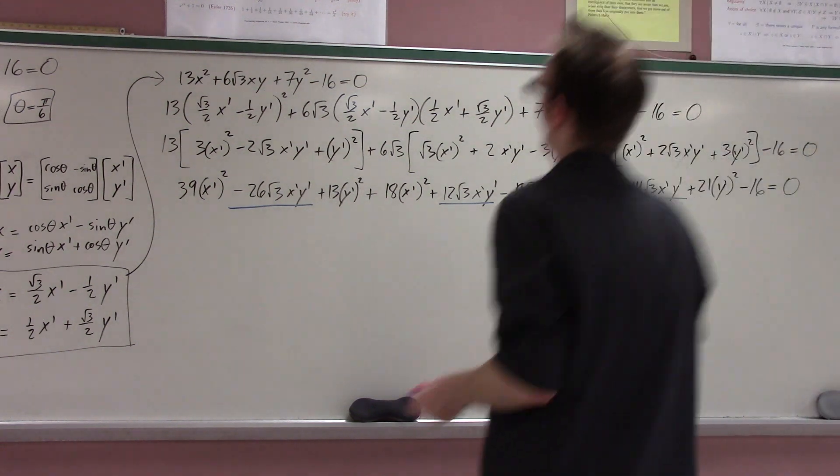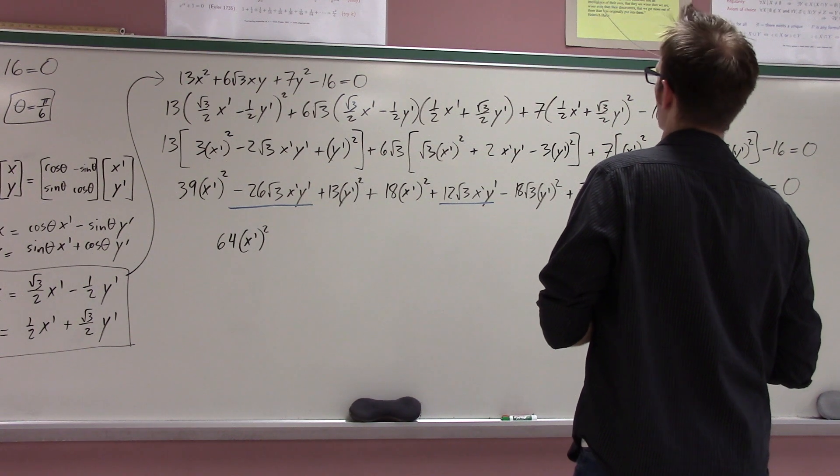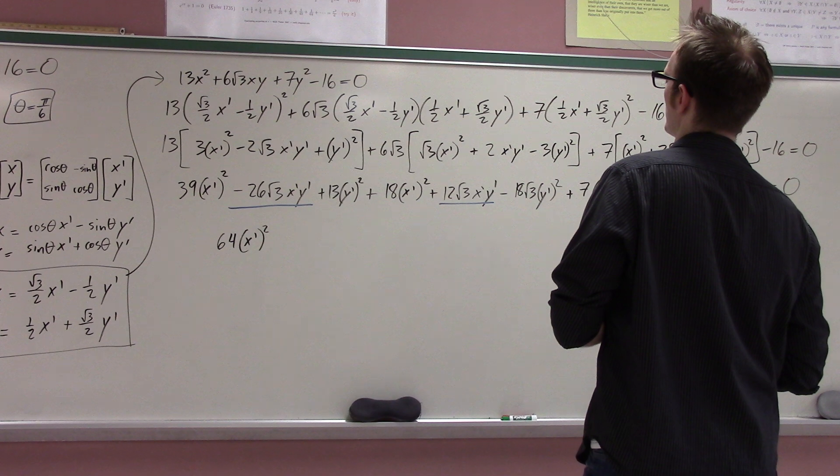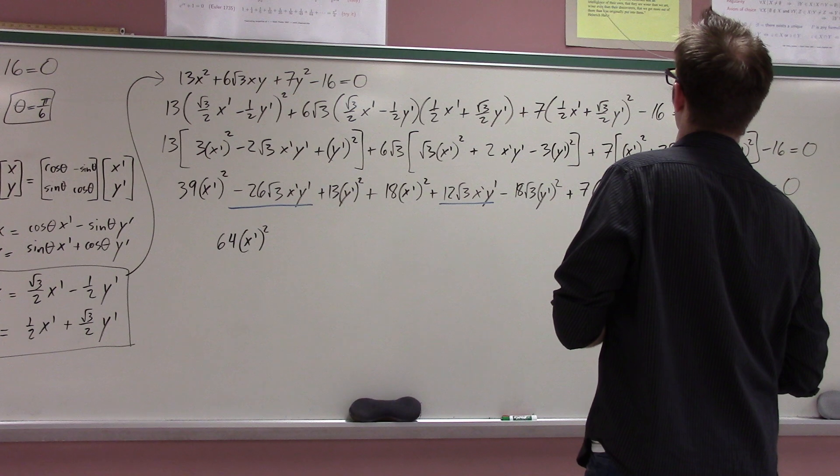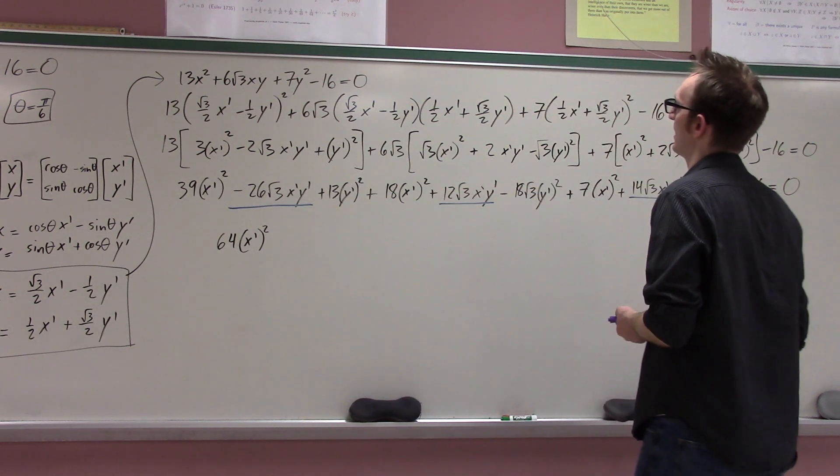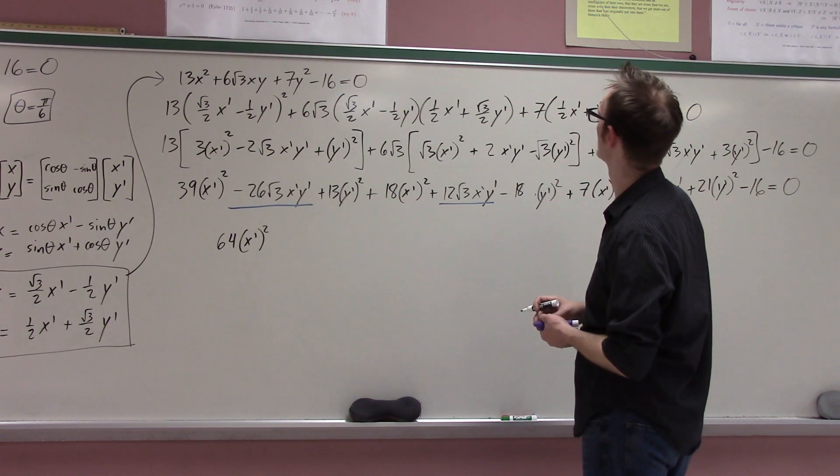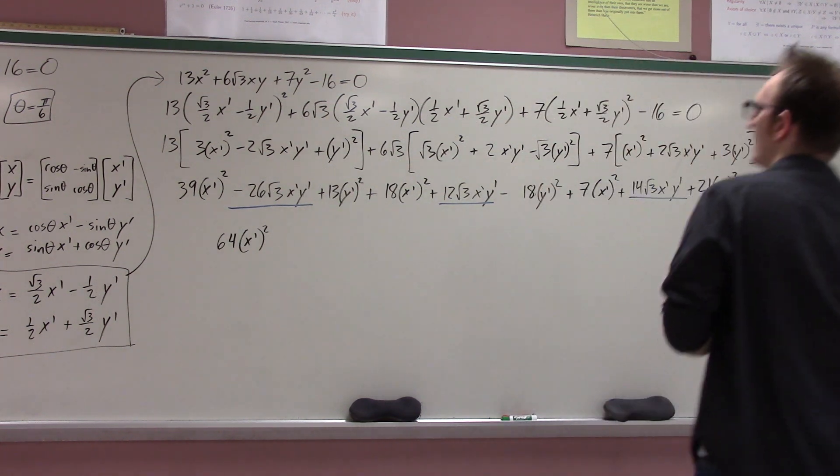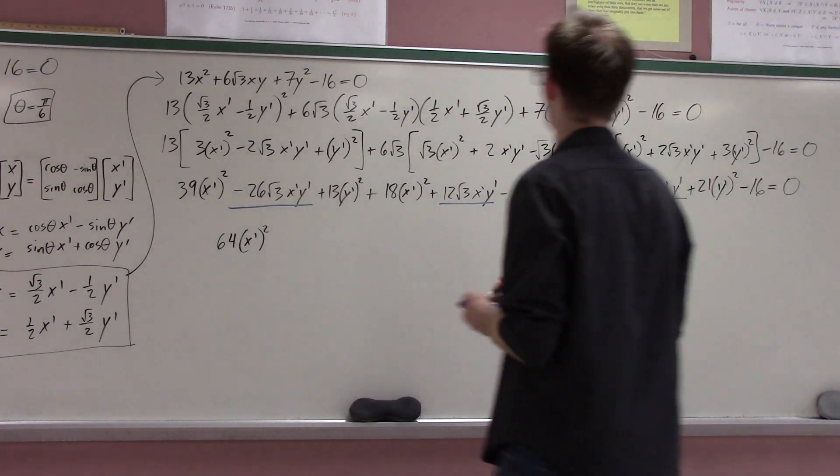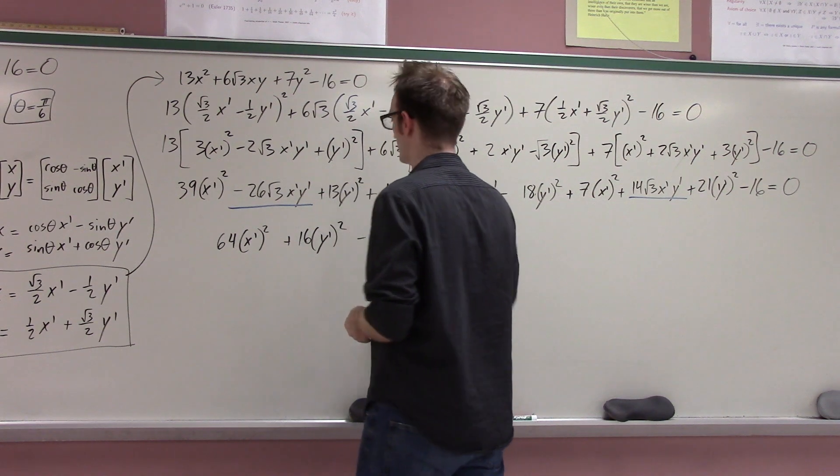All right so our final answer is whatever 39 18 and 7 is what is that 25 64 so I get 64 x prime squared and then what's one of these is probably wrong right. Hold on a second. Well maybe maybe not this should be maybe like a root three way up here yeah so that's actually not 18 root 3 but instead it is 18 yeah.